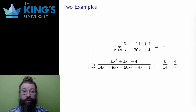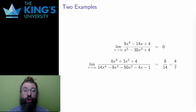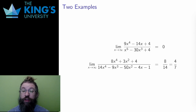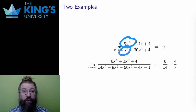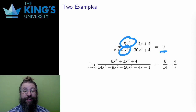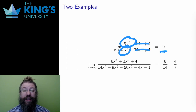Let me do two examples. In both limits, the numerator and denominator are polynomials, so the asymptotic order is entirely determined by the degree of the polynomial. In the first example, the degree of the numerator is 4 but the degree of the denominator is 5. The denominator has a higher asymptotic order, so the limit must be zero. All the other terms — minus 14x plus 4, minus 30x cubed plus 4 — don't matter at all to this limit. Just the highest asymptotic order matters.